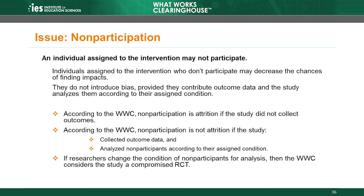The WWC counts non-participation as attrition if the study doesn't collect outcome data from non-participants. However, if the study collects outcome data from non-participants and includes the students in the analysis according to their originally assigned conditions, then non-participation does not count as attrition. Studies must analyze individuals according to the condition to which they were initially assigned. If a study changes the condition of any student, it compromises the integrity of the random assignment. In that case, attrition is irrelevant because the study must demonstrate equivalence regardless of the attrition rates.